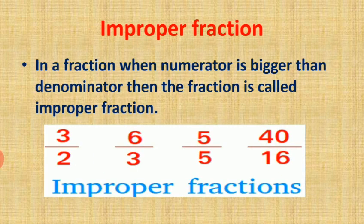Next is improper fraction. In a fraction, when the numerator is bigger than the denominator, then the fraction is called an improper fraction. For example, three upon two — three is numerator and two is denominator, and three is bigger than two, so numerator is greater than denominator, making it an improper fraction. Same way, six upon three and forty upon sixty — wait, for both of these, the numerator is bigger than the denominator, so both are improper fractions.